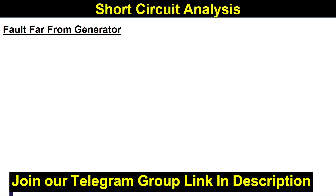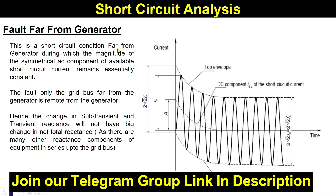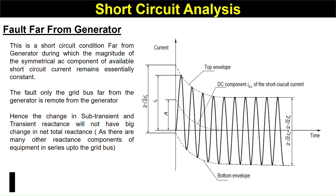Now, for a fault far from the generator — on a bus — the graph is symmetrical. During a short circuit condition far from the generator, the magnitude of the symmetrical AC component of the available short circuit current remains essentially constant. This is because there are many other reacting components in series with the grid, so there is little effect of sub-transient and transient reactance. That is why the graph is symmetrical and the DC component decays very quickly.